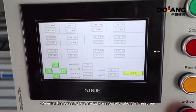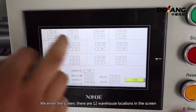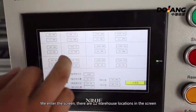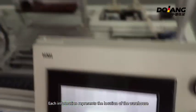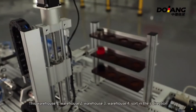There are 12 warehouse locations in the screen. Each information represents the location of a warehouse. This is warehouse one, warehouse two, warehouse three, warehouse four shown in the direction.